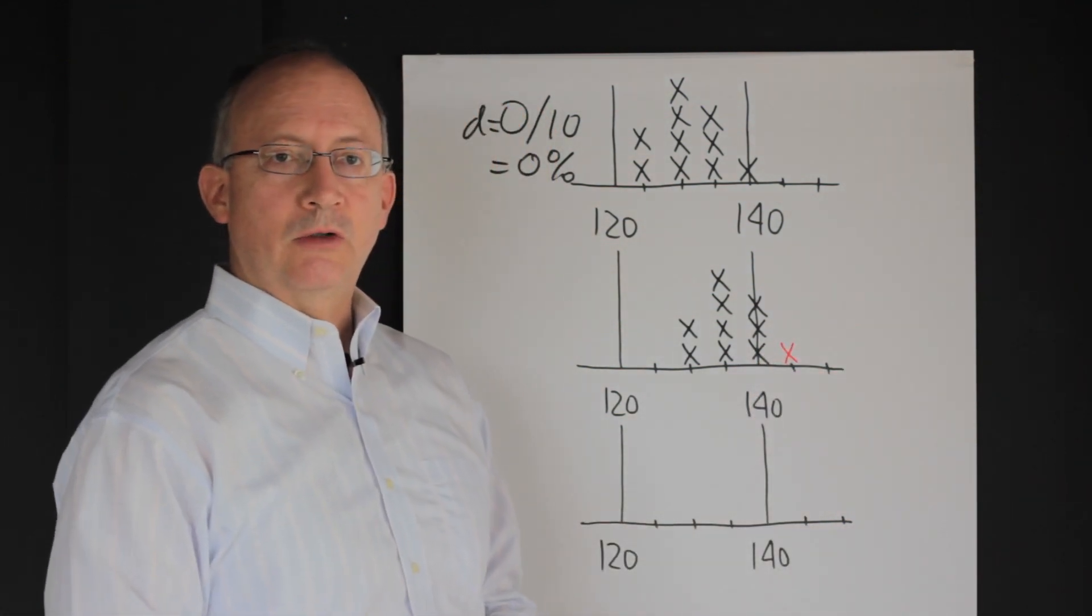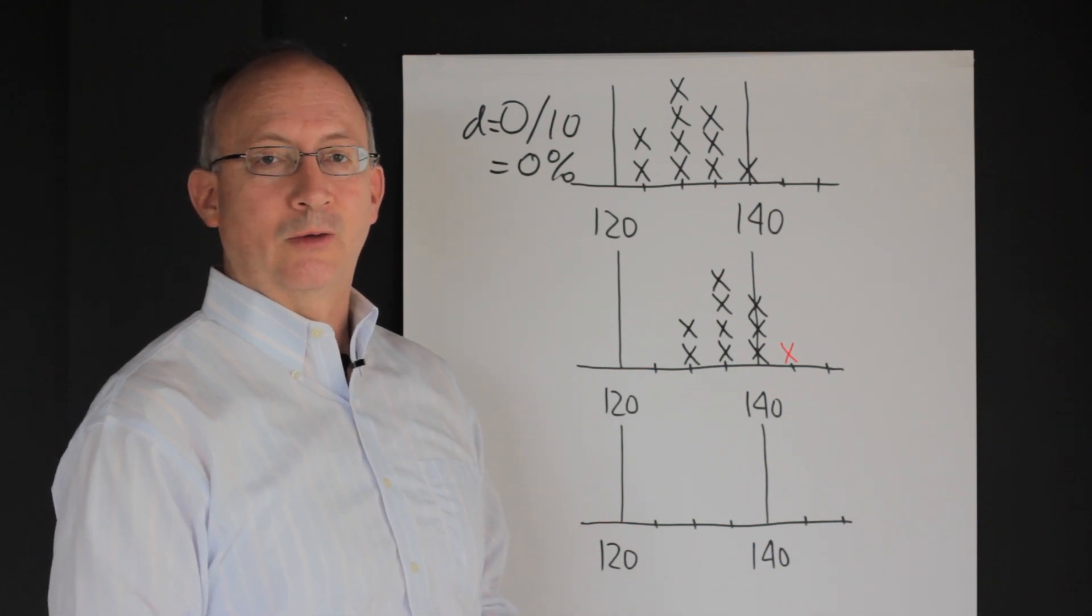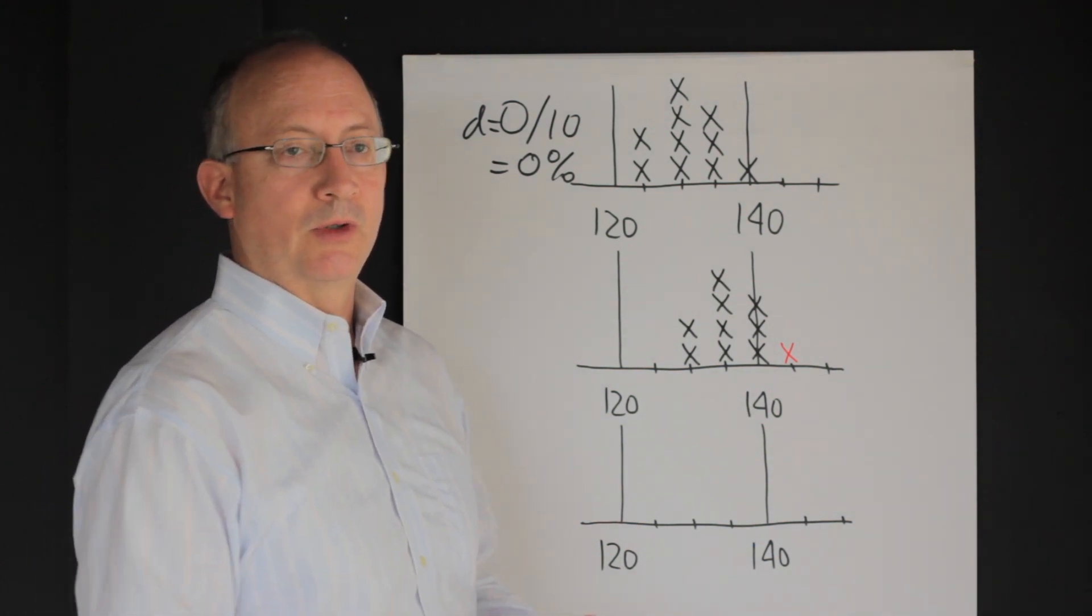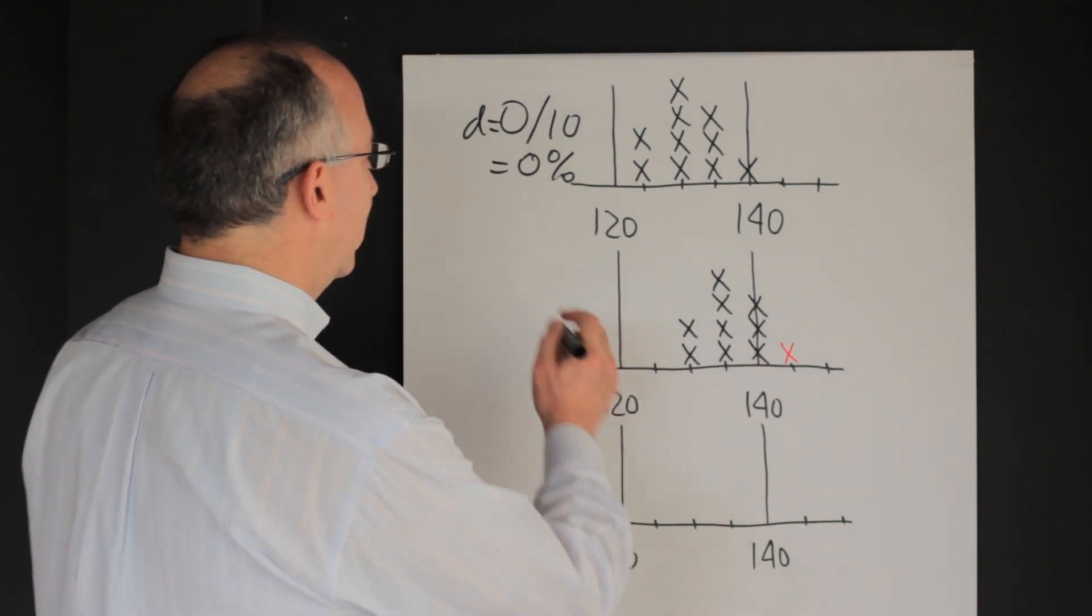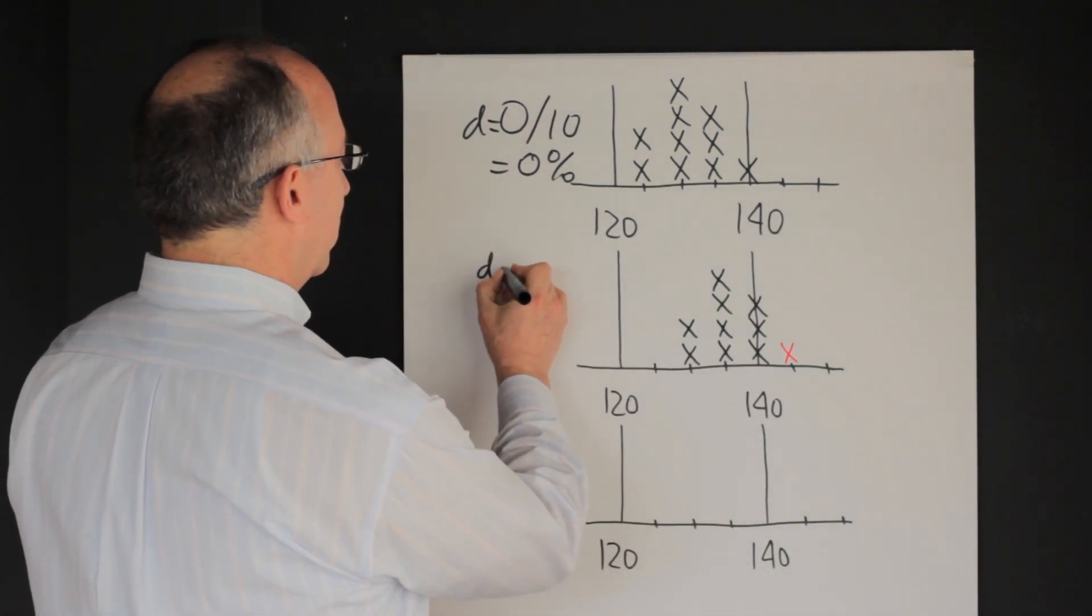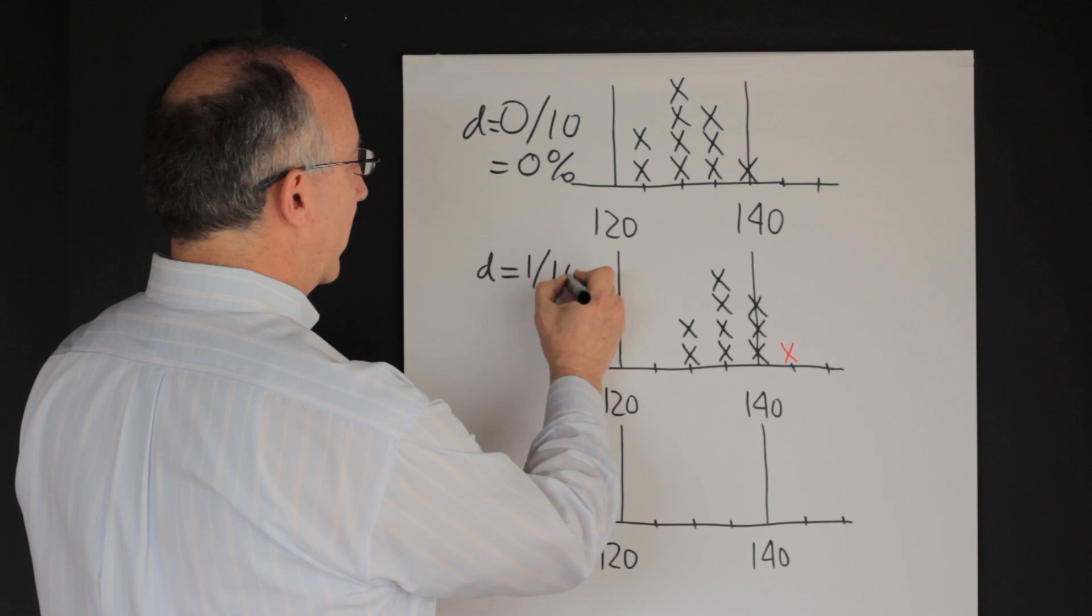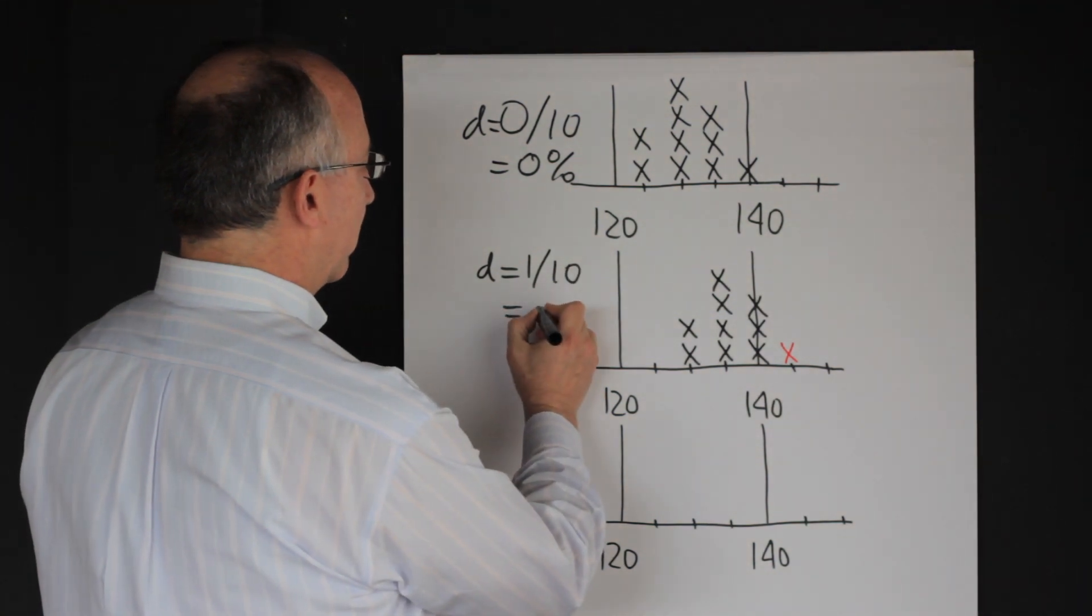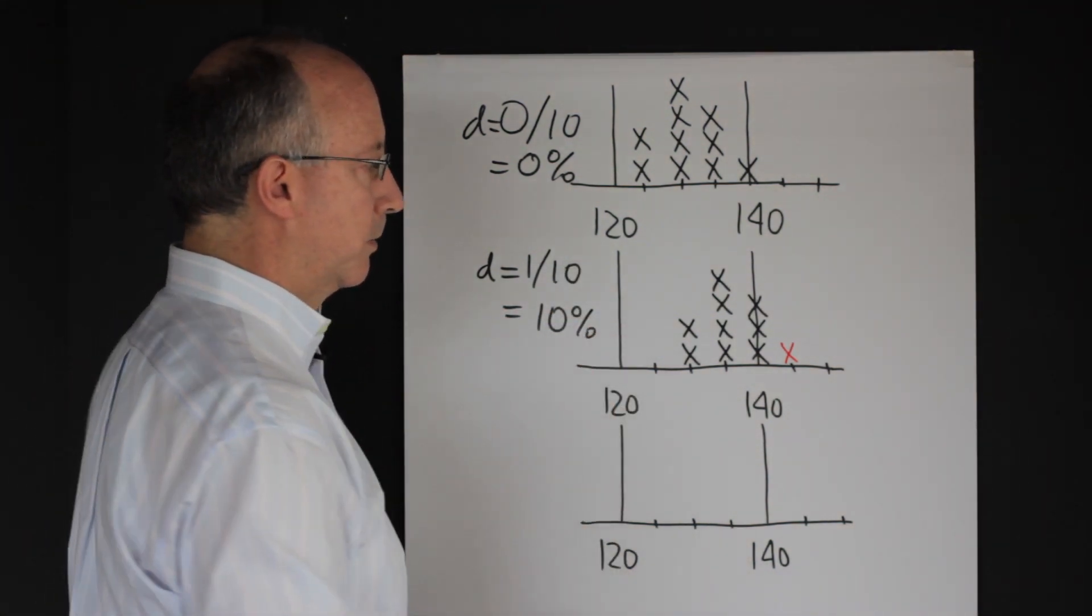What if this were to continue? Actually, before even we look at how this would continue, let's just look at what's the situation that we have now. This defect now actually would be in a report and it would be one out of ten. So, now we are at a ten percent defective proportion.